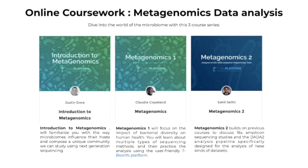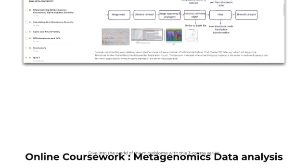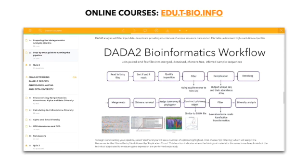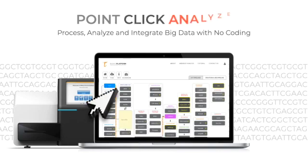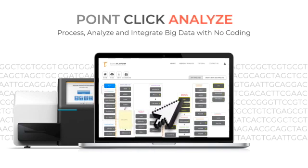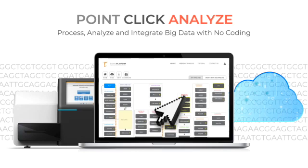Metagenomics 2 builds on previous courses to discuss 16S amplicon sequencing studies and the data-to-analysis pipeline specifically designed for the analysis of these kinds of datasets. In the course, you will get a detailed overview of key topics, important terminology, as well as a technical overview of the methods applied to these datasets. The interactive tBioInfo platform allows you to process, analyze, and integrate big data with no coding, so we will learn how to apply some of the tools on the platform to study 16S microbial RNA.